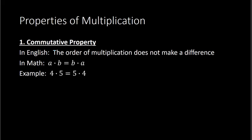A way to remember the commutative property is the English word 'commute.' Commute has the idea of moving or traveling — your parents might commute to work each day, meaning they're traveling to work. So in the commutative property, we see that word commute, which means moving. With this property, what's moving is the numbers. The numbers can move around and still have the same outcome.